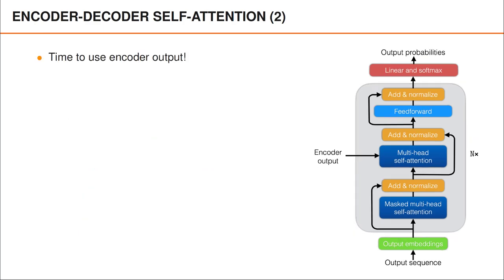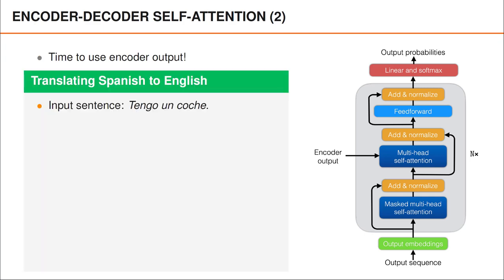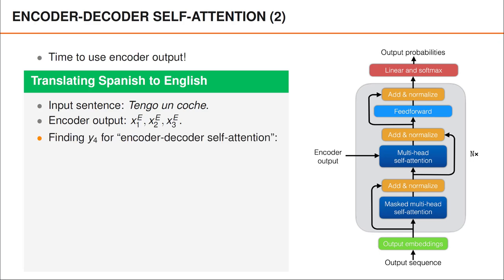It's finally time to make use of the vectors computed by the encoder. Let us illustrate how the encoder-decoder self-attention works using a simple example. Suppose the input sequence to the encoder is "Tengo un corte." In that case, the encoder takes three vectors as input and therefore also outputs three vectors. We denote these output vectors as x1e, x2e, and x3e, where capital E stands for encoder. Suppose now that the output sequence fed as input to the decoder is longer than three, and that we would like to compute a new word embedding for the fourth word in that sequence.